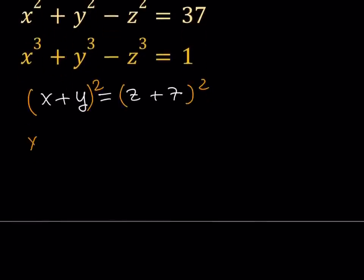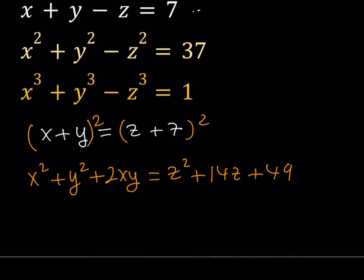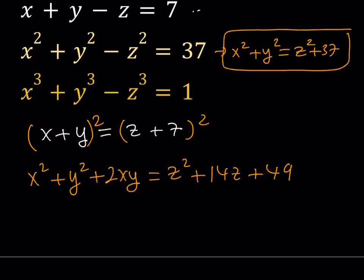And that gives me x squared plus y squared plus 2xy equals z squared plus 14z plus 49. Now, from the second equation, I do know that x squared plus y squared can be isolated and written as z squared plus 37. And then, I would like to use this here on the left-hand side.